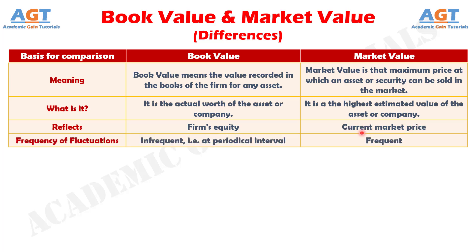Number four: frequency of fluctuations is infrequent, that is, fluctuations occur at periodical intervals in the case of book value, whereas frequency of fluctuations is frequent in the case of market value.